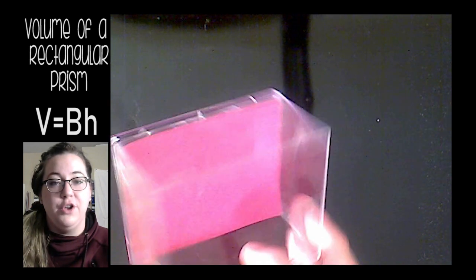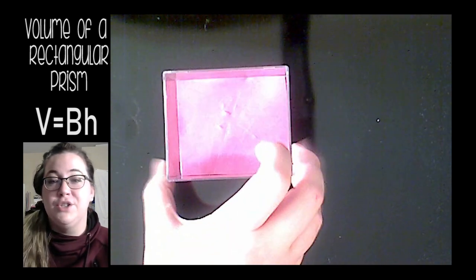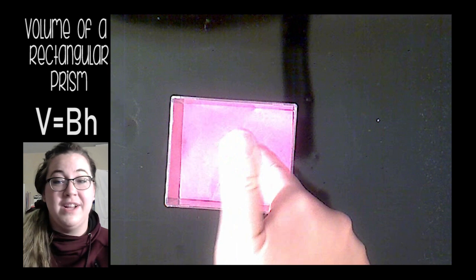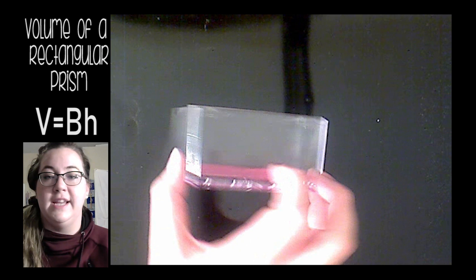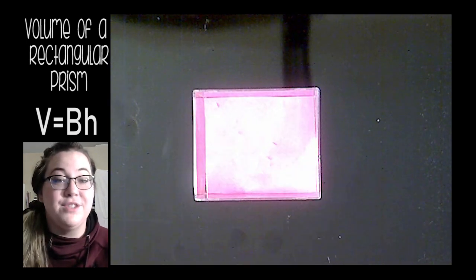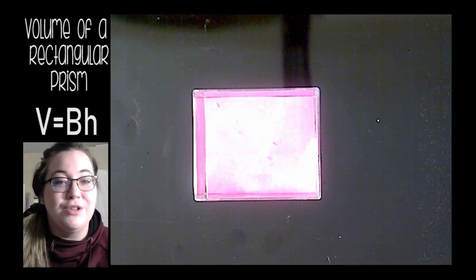So today I'm going to be talking about rectangular prisms and how to find the volume of a rectangular prism. A rectangular prism has a rectangular base, and if you notice all of the sides are also rectangles. If I had a lid for this rectangular prism, it would also be a rectangle.